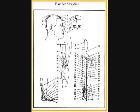UB65: mania, headache, stiff neck, blurring of vision, backache, pain in the lower extremities. UB66: headache, stiff neck, blurring of vision, epistaxis, mania. UB67: headache, nasal obstruction, epistaxis, ophthalmalgia, malposition of the fetus, difficult labor and retention of the afterbirth.